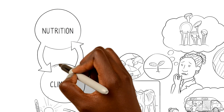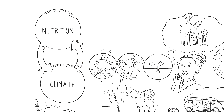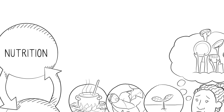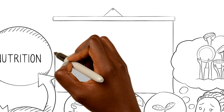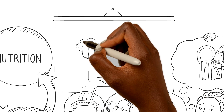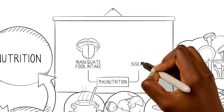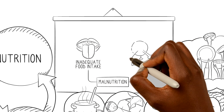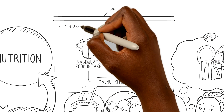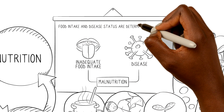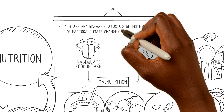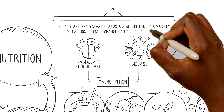Climate and nutrition are interlinked — but how? Let's take a closer look. Malnutrition is a result of either inadequate food intake or a disease that prevents the body's uptake of nutrients. Food intake and disease status are determined by a variety of factors, and climate change can affect all of them.